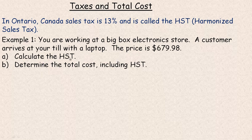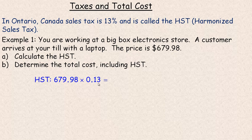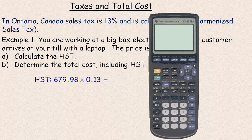Part A asks us to calculate the HST — the tax — and then the total cost including the tax. So 13% is 0.13 as a decimal, so we would take the $679.98 and multiply it by 0.13. So we would go $679.98 times 0.13.